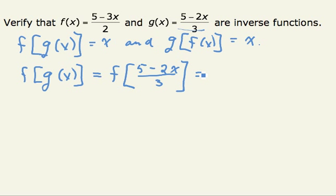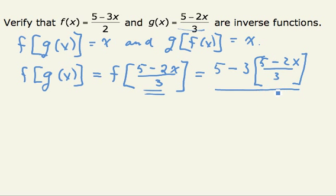Now I'm just going to plug this expression, 5 minus 2x divided by 3, into the function f. What the function f does is takes 5 and subtracts 3 times the input, whatever it is, but this input is this expression, 5 minus 2x divided by 3. And then I'm going to divide the whole expression by 2.